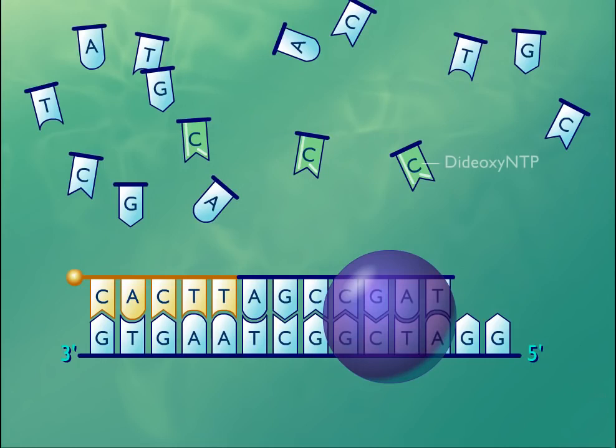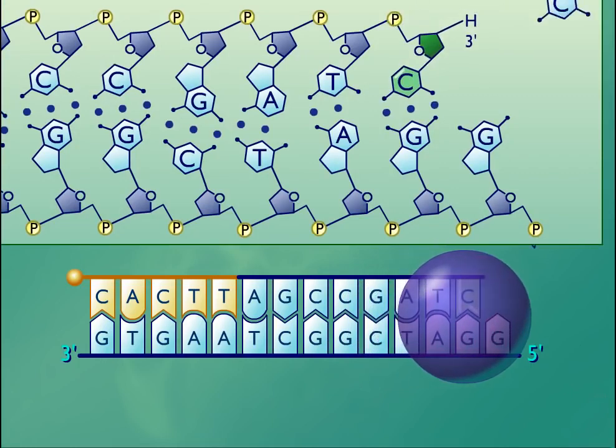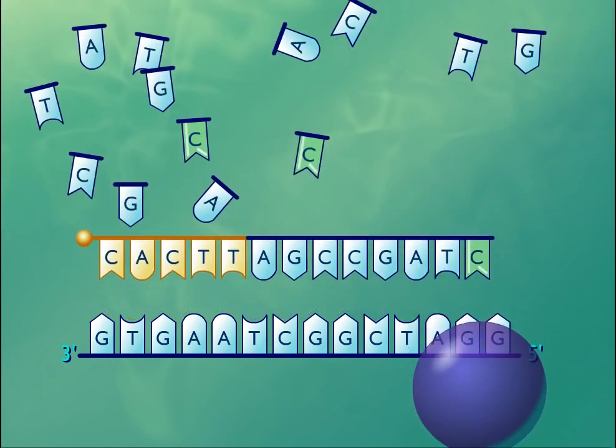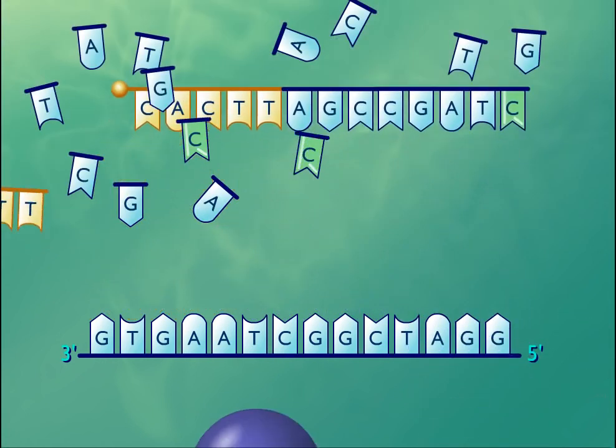The contents of the reaction tubes are then transferred to four lanes of an electrophoresis gel, and the oligonucleotides are separated by size and nucleotide type.